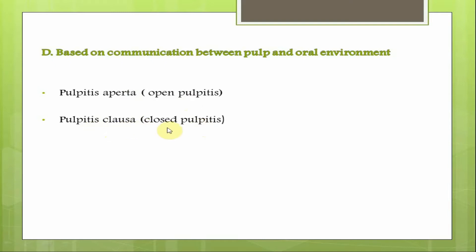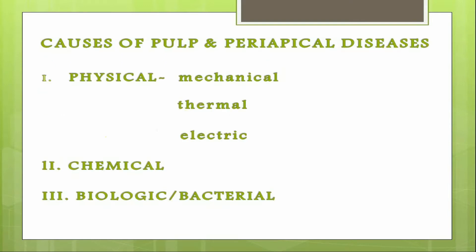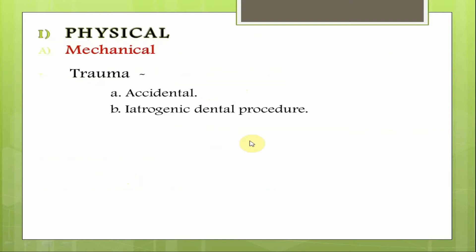The causes of pulp and periapical diseases can be physical, chemical, or biological/bacterial. Physical causes can be of three types: mechanical, thermal, or electric. Mechanical causes of pulp injury include trauma such as an accidental fall resulting in a fracture of the tooth, which may cause disease of the pulp.